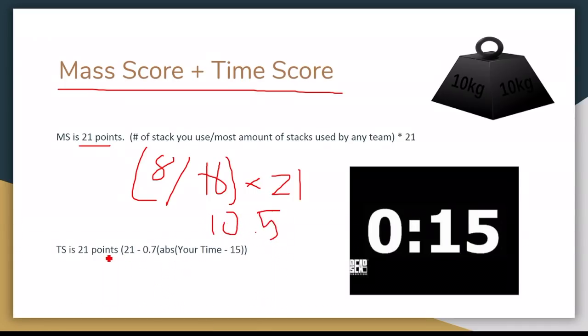So your time score is 21 points again. So say your time is 15, exactly on the dot. 15 minus 15 is 0, absolute value of 0 is 0, 0.7 times 0 is 0, 21 minus 0 is 21, so you have 21 points.